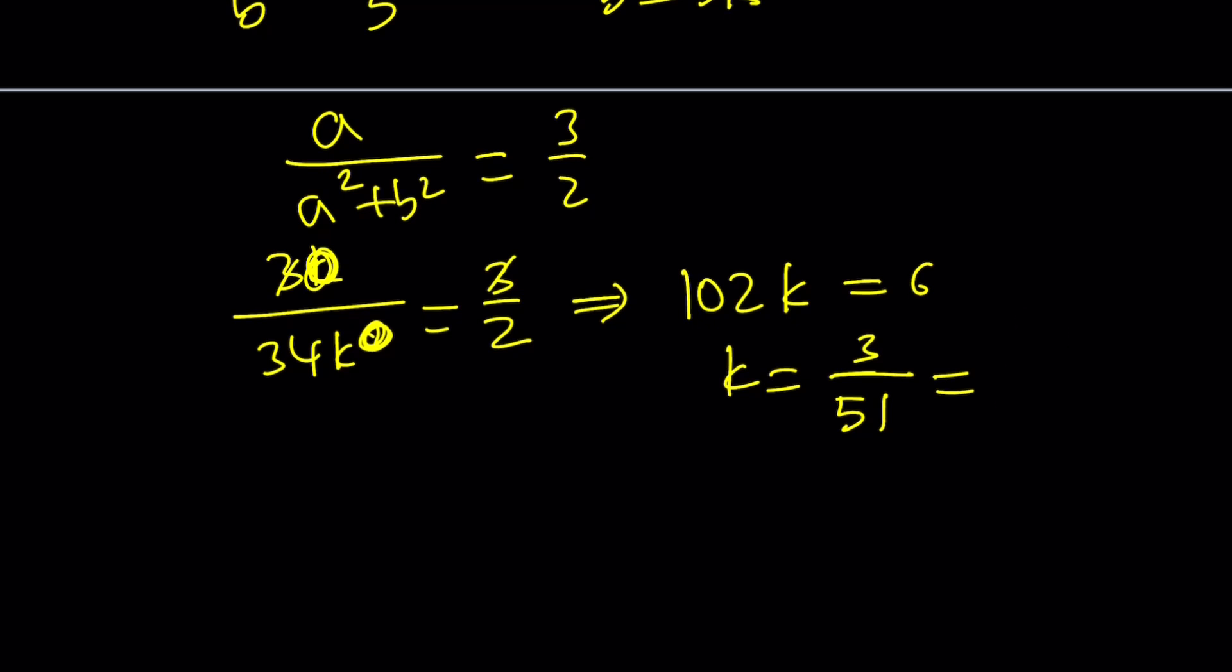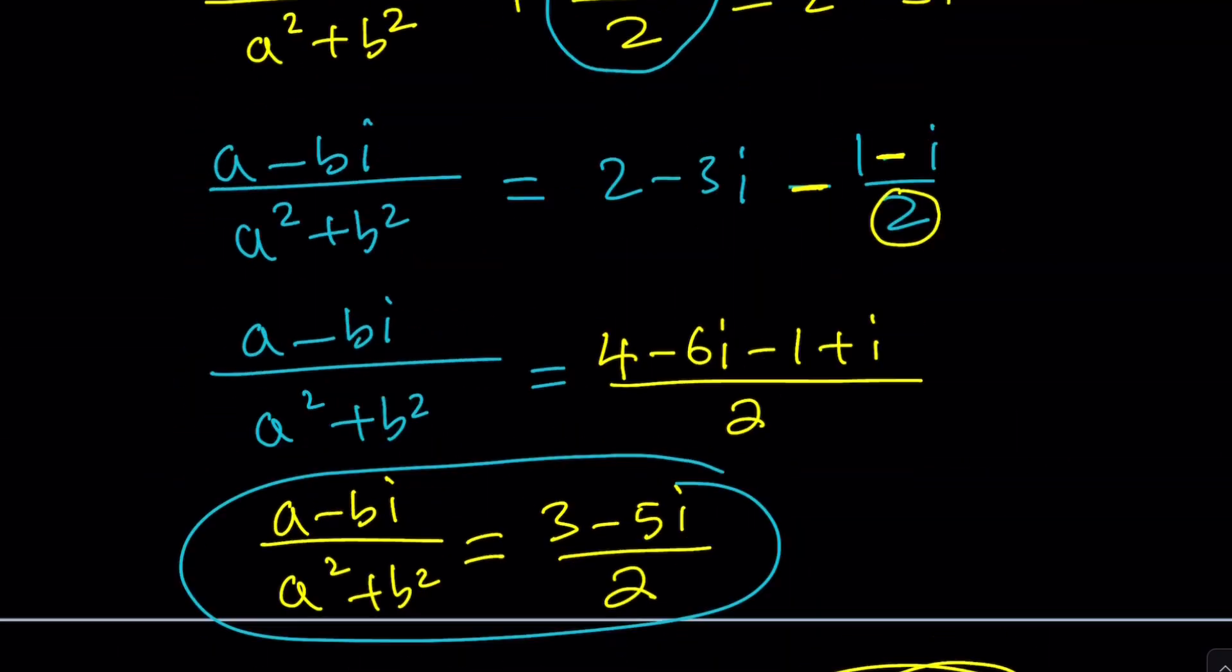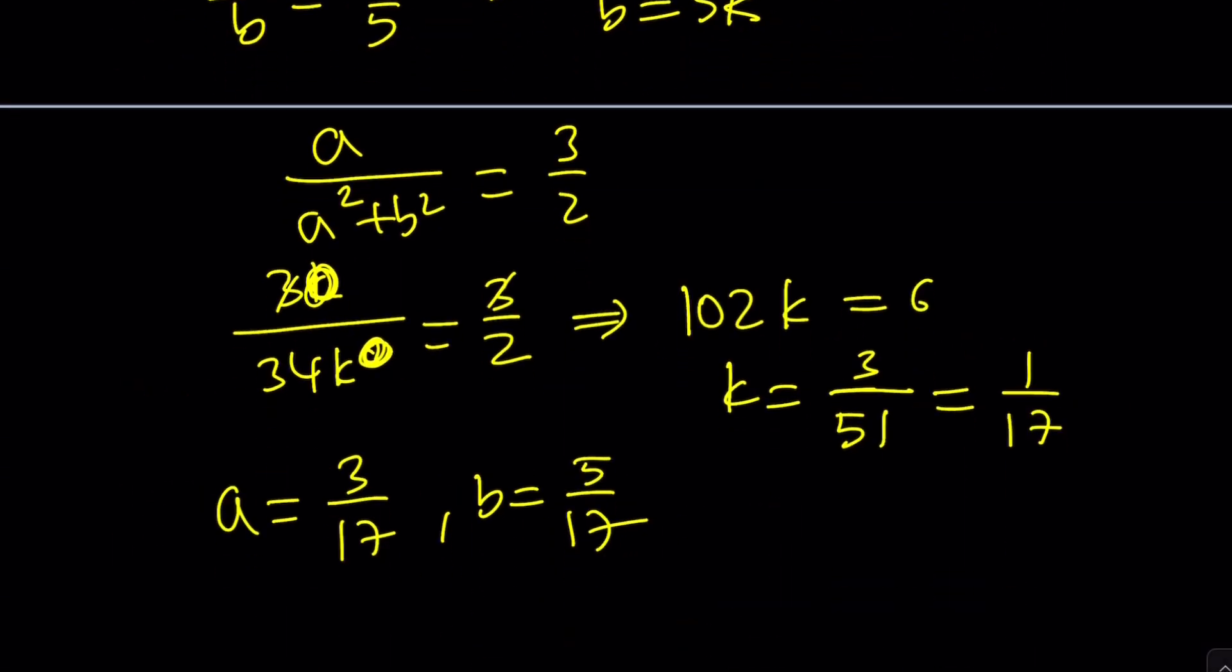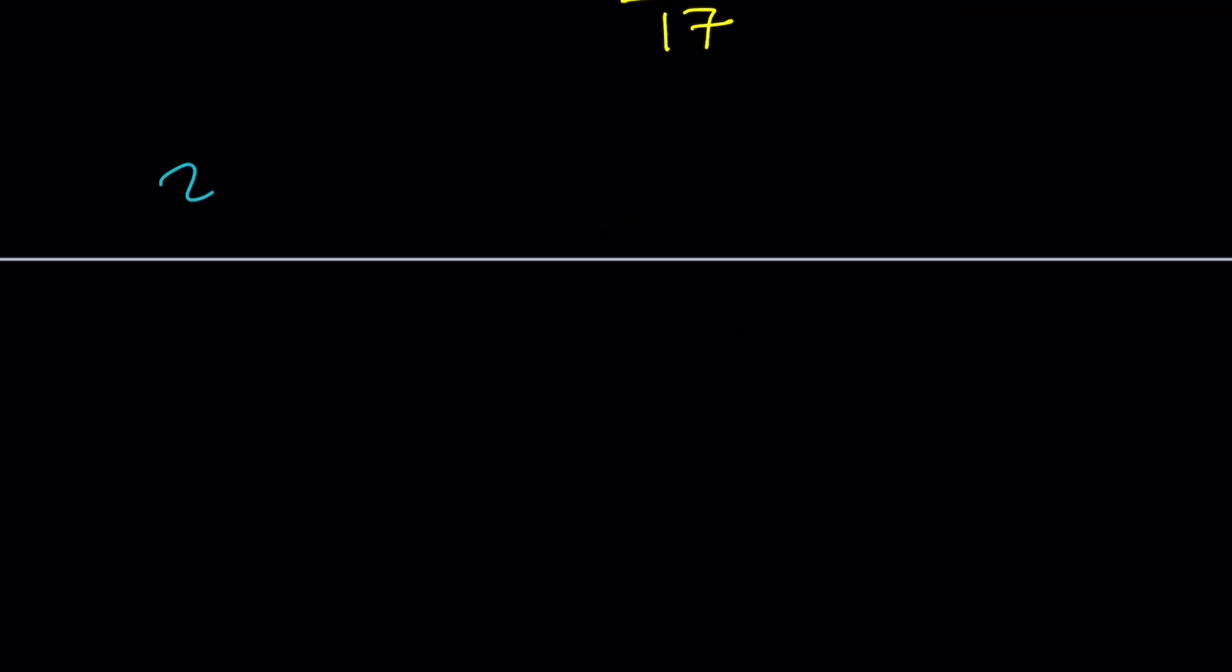So what do you do with that? Well once you find k, obviously you can find A and B, because A is 3k which is 3 over 17, and B is 5k which is 5 over 17. And remember we were looking for Z, and Z is A plus BI, right? So we're going to plug it in. Z equals 3 over 17 plus 5 over 17 I. Some people are going to write it as 3 plus 5I all over 17. This brings us to the end of the first method and now let's use the second method.